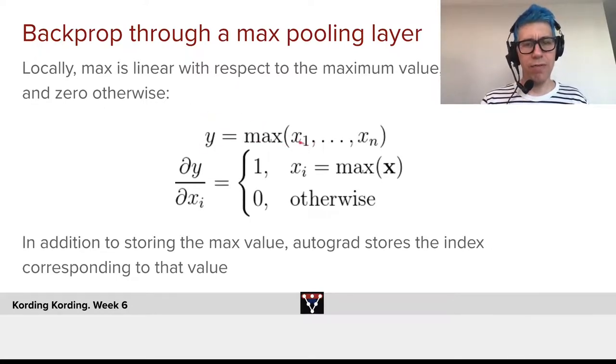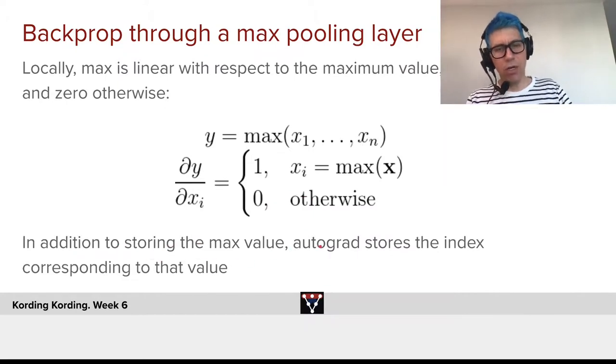Now y is max of x1 through xn. The derivative is one if it's the maximum, and it's zero otherwise. And so in addition to storing the maximal value, all autograd has to do is store the index corresponding to that value, and then treat it as if all the others had no input.